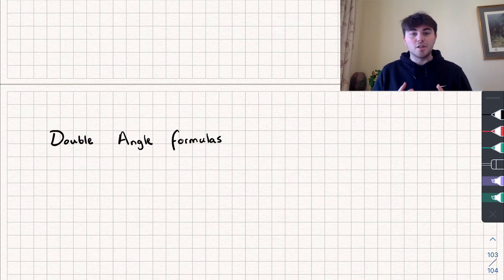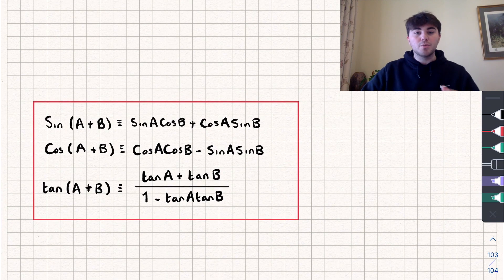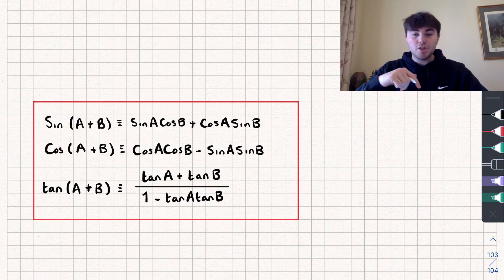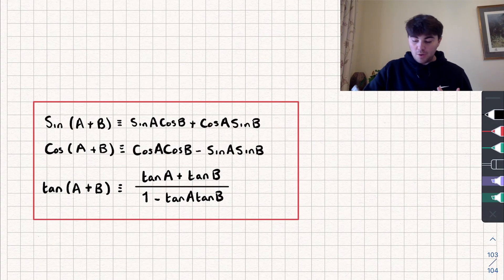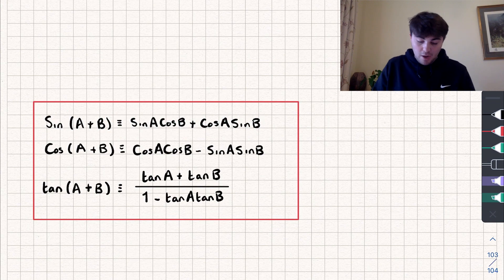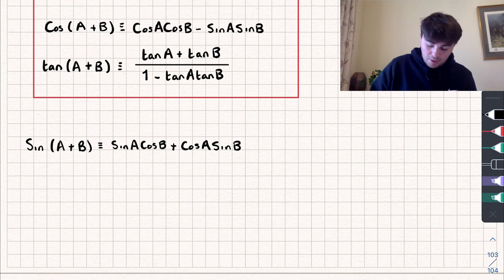Hello, in this video I'm going to introduce you to the double angle formulas. To find these we're going to be using the angle addition formulas, which I've written down in this red box here. If you're unfamiliar with where these formulas come from, I'll link the video I've made on that in the description so you can go and watch that first. We'll start off by looking at sine of a plus b, and I'm going to bring this formula down.